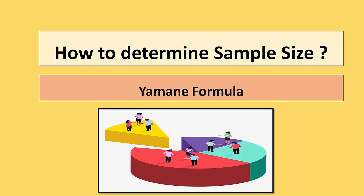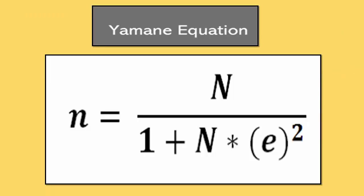In the previous video, our condition was when you are not aware about your population, the population is unknown or the population is infinite. At that time we have used the Cochran's formula. Now look at some example of Yamane formula.